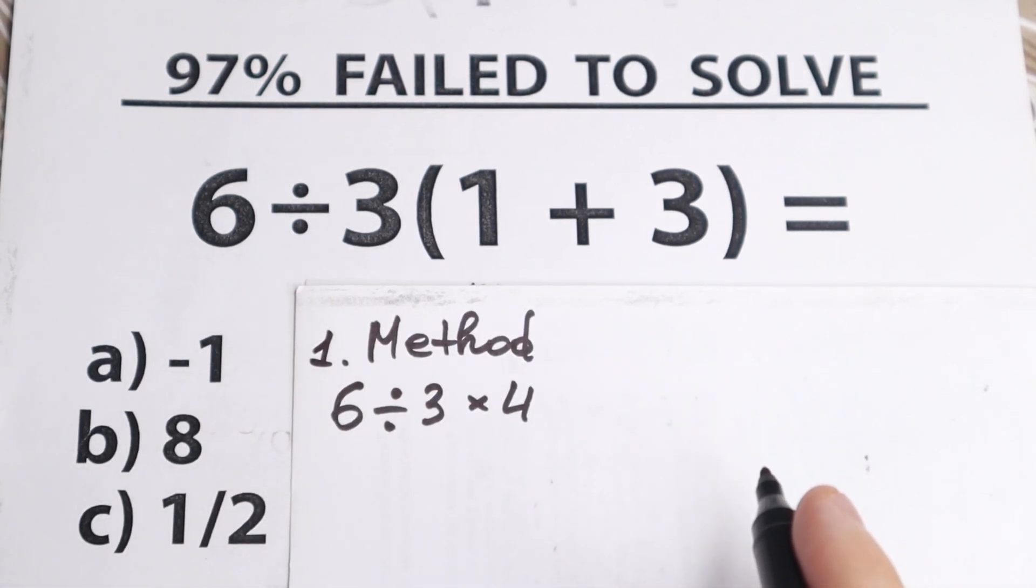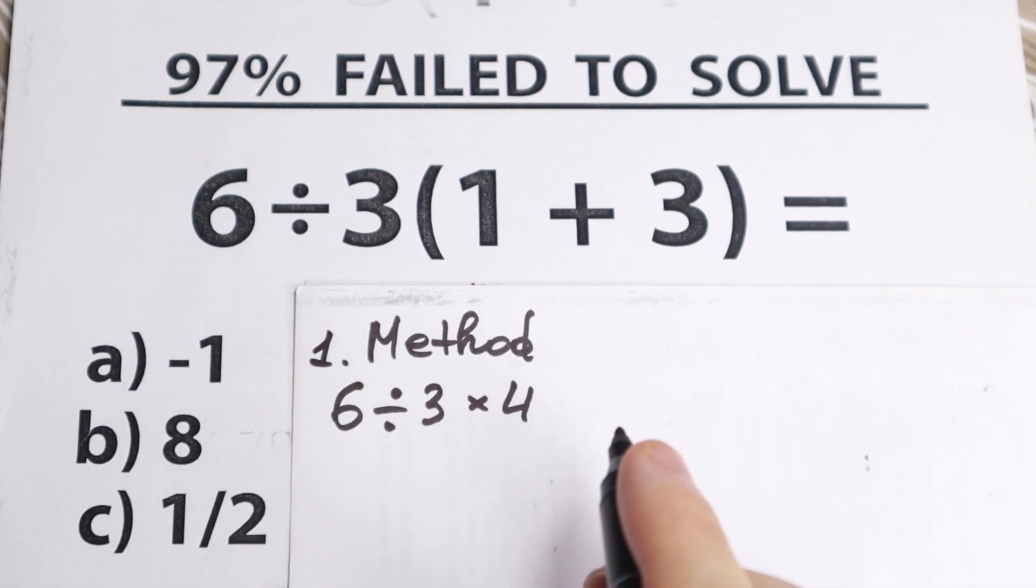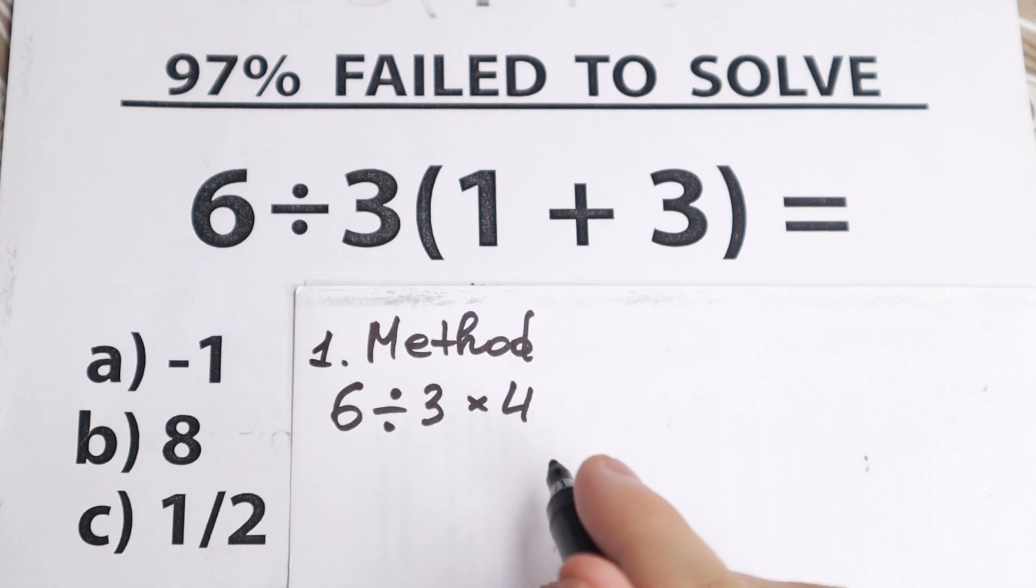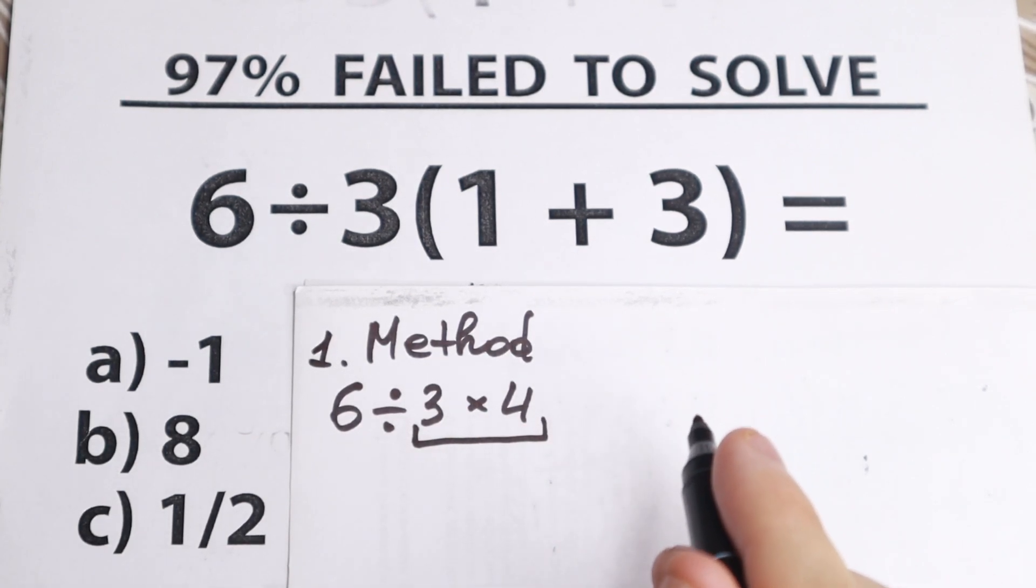So we go with parentheses. We need to start with this one. And let's go next. We have 6 divided by 3 times 4. And if we go with multiplication at first, let's start with this one. So 3 times 4 equals 12.